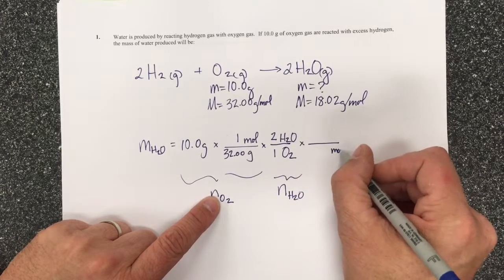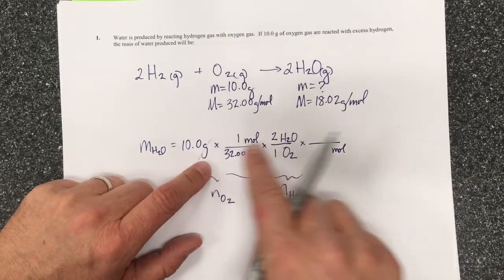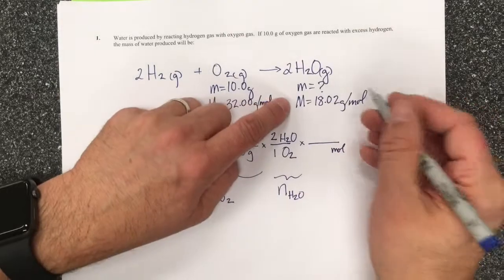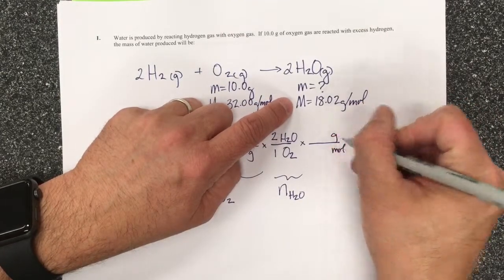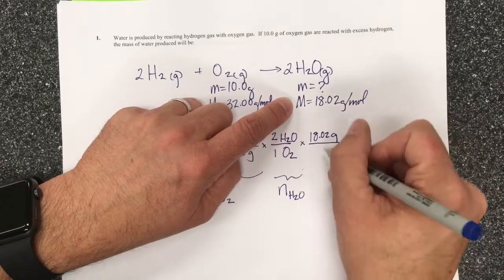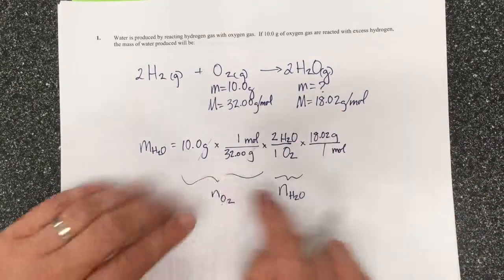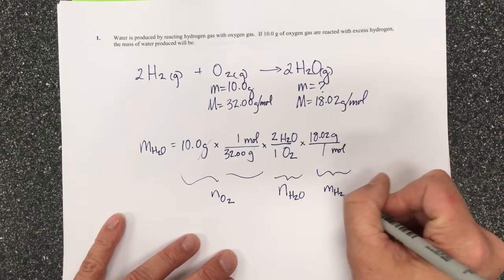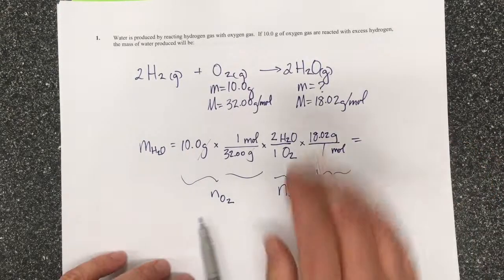Then I'm going to get rid of mole because remember I was left with mole, then I converted it to mole of water. Then I'm going to convert the mole of water into the mass of water by taking 18.02 grams for one mole, using the molar mass. So this will give me the mass of H2O in the end.